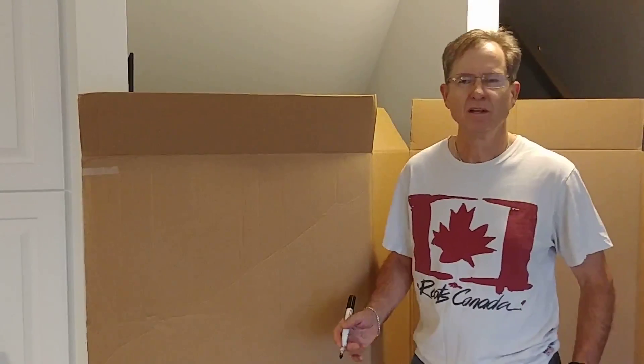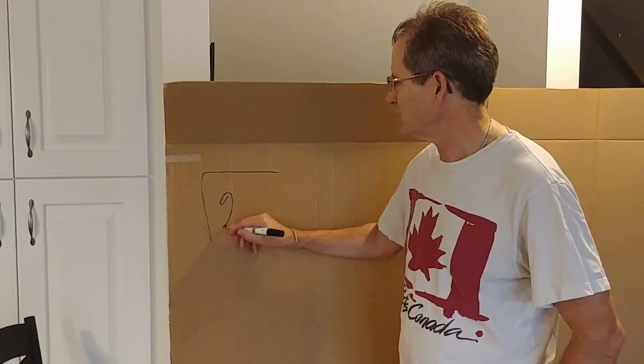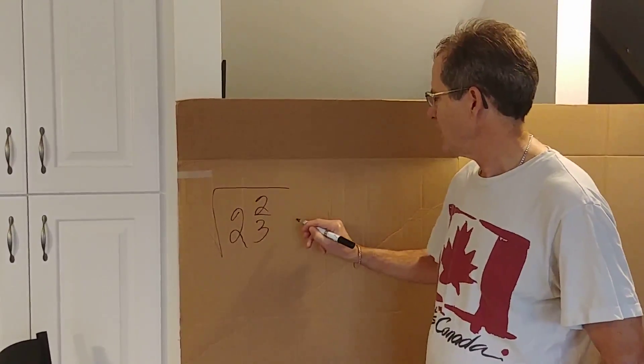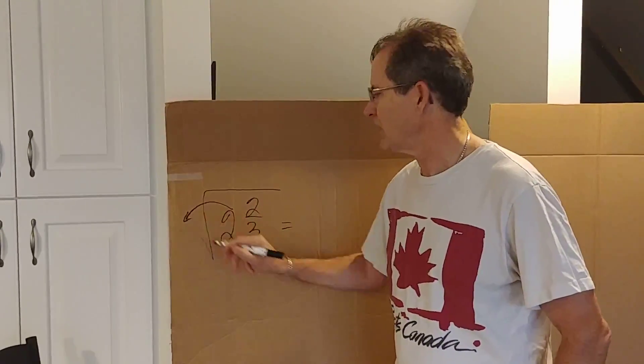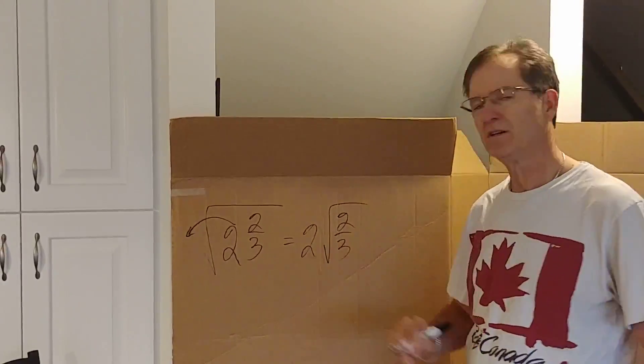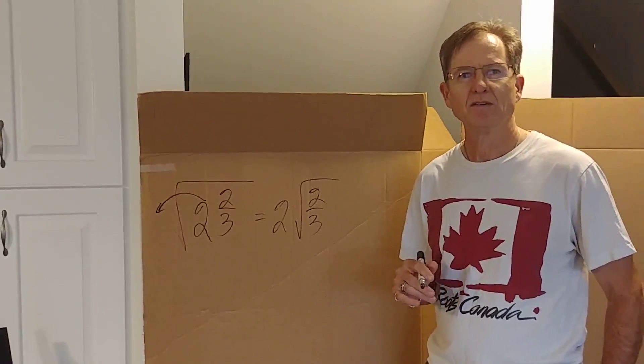So let's say for example you have the square root of let's say 2 and 2/3. In order to simplify that can you just move this 2 outside and get 2 root 2/3? Well of course you can't and let me prove it to you.